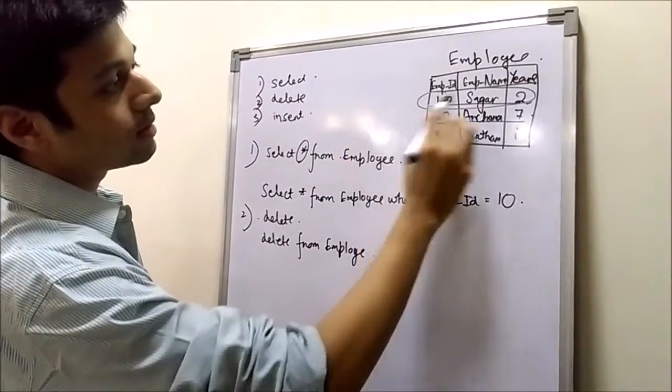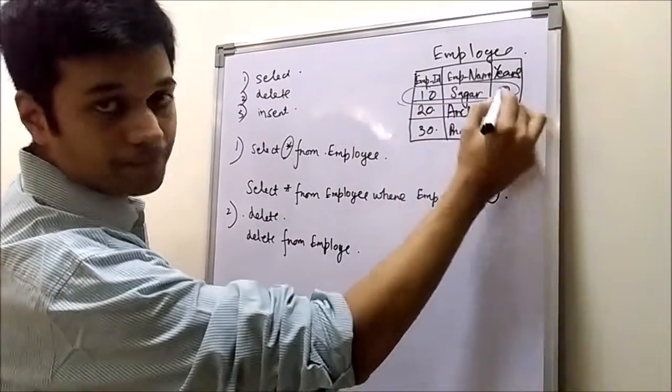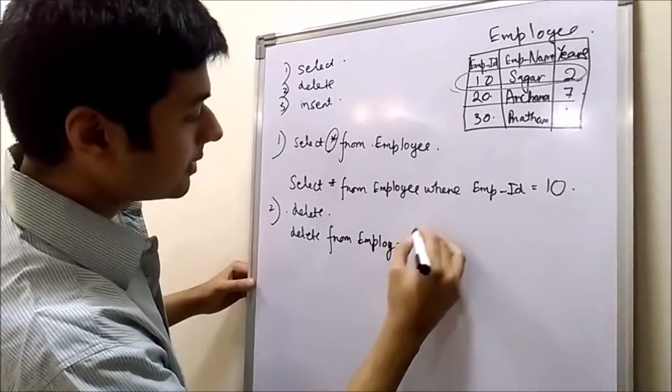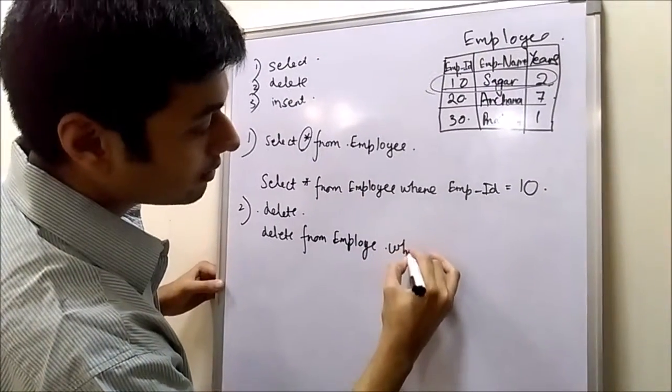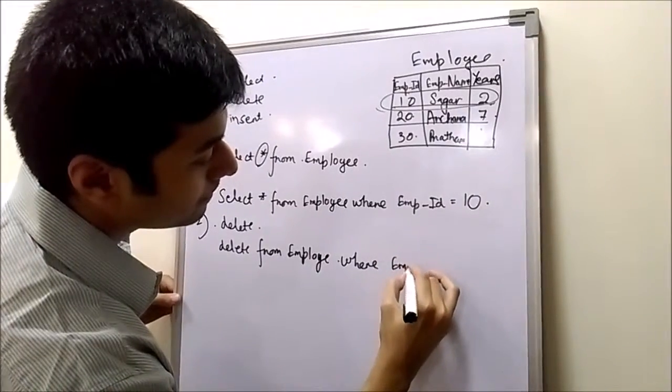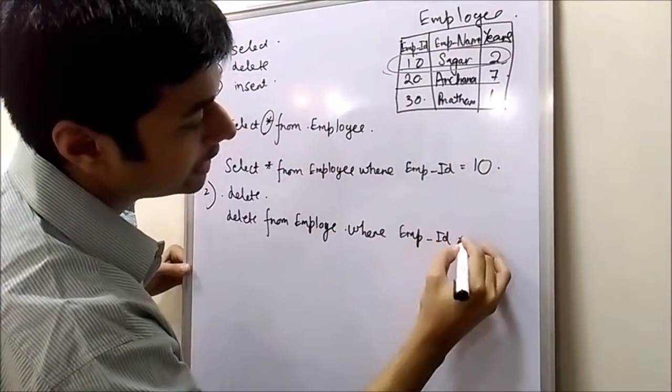If you want to delete a row, this row, so we will write delete from table name, then where, where clause, empid equals to 10.